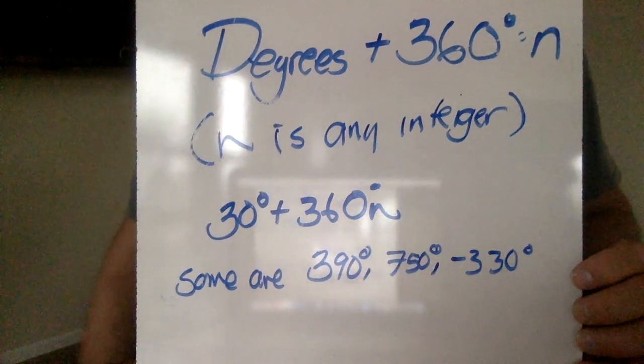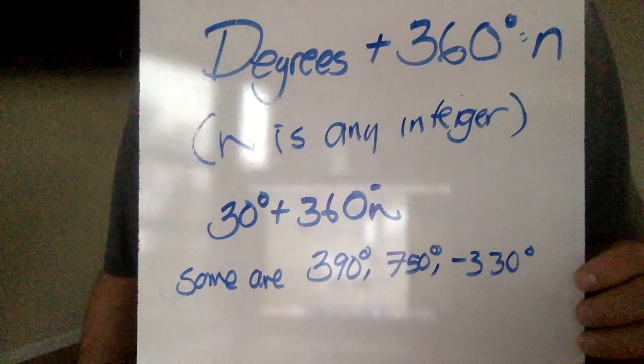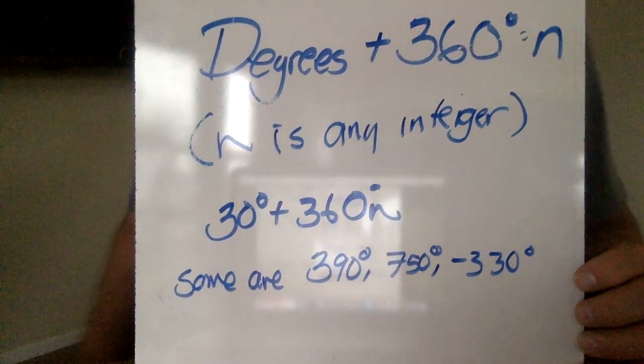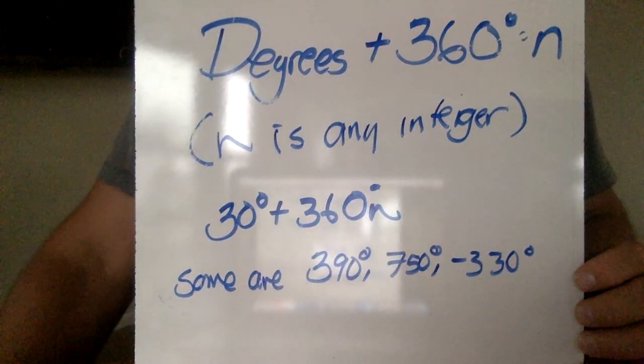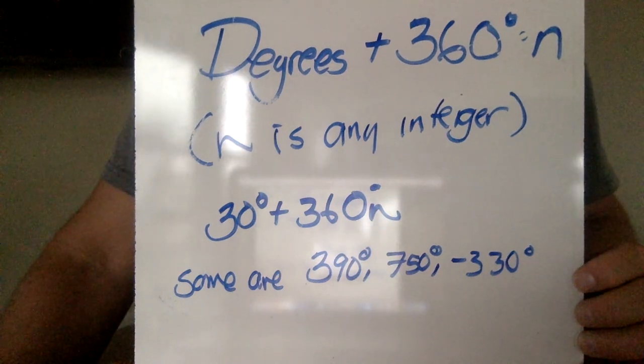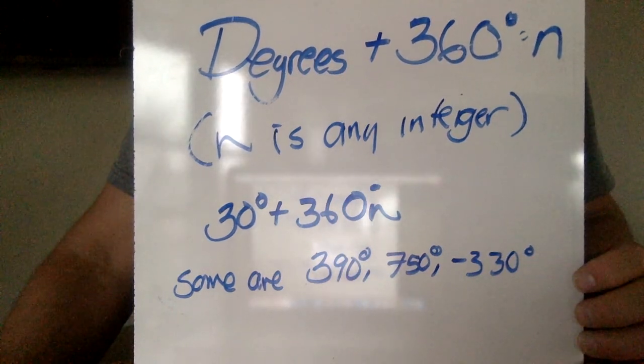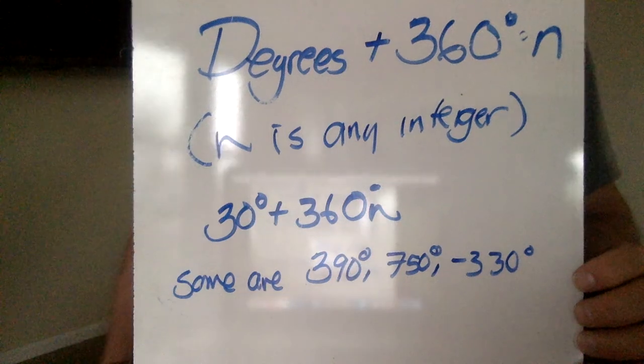So some of the co-terminal angles, think of snowboarders going the same direction, some of the co-terminal angles would be 30 plus 360, another 360.